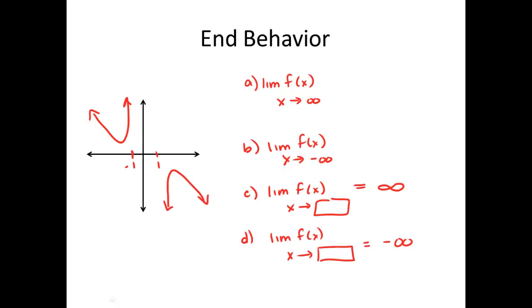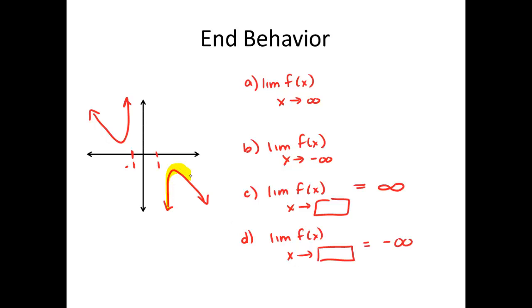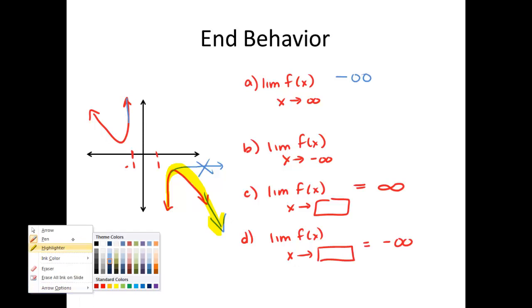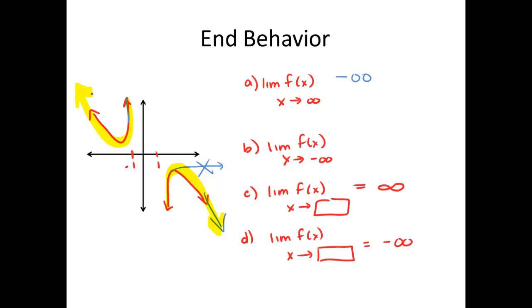We have a different type of graph here. As I approach positive infinity, there doesn't seem to be any leveling — it actually seems to dive. My graph is not getting close to a single number; it's going towards negative infinity. Had it leveled off, we could have said something else, but it doesn't. Now going the other side, towards negative infinity, it's also not leveling off or approaching an asymptote — we're actually approaching positive infinity.